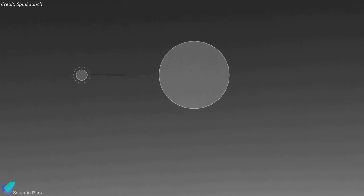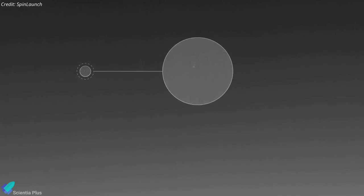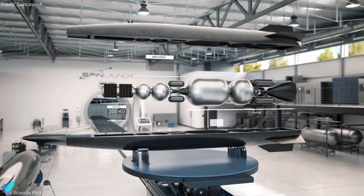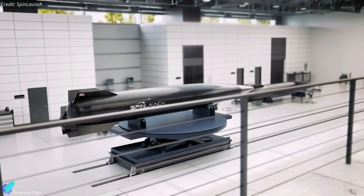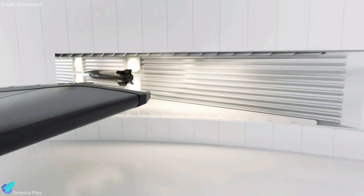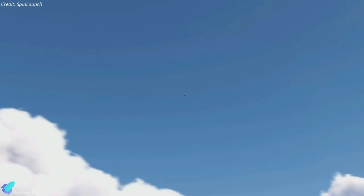While the first test flight vehicle did not have a rocket engine on board, Spin Launch plans to add that and other internal systems in later suborbital test flights. The company also plans to recover and reuse its vehicles, and the first test rocket proved absolutely flyable after engineers retrieved it.